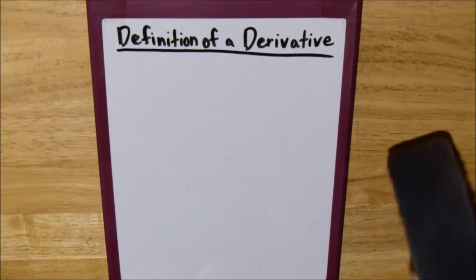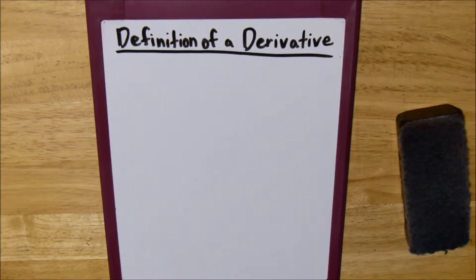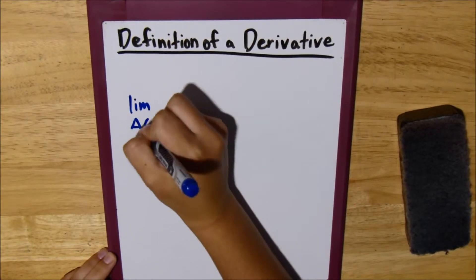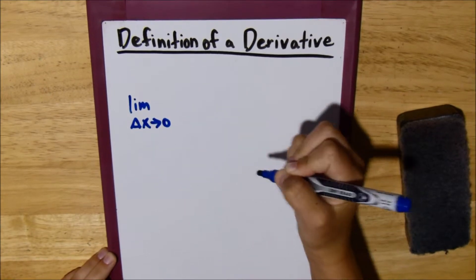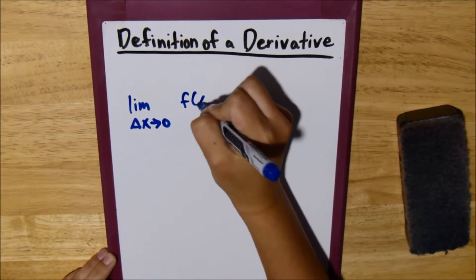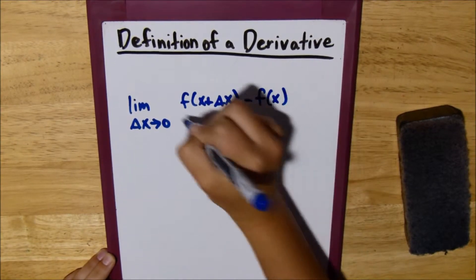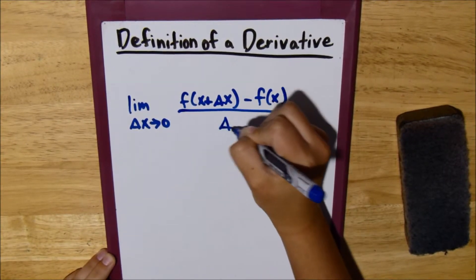Alright, so what we use to find the derivative of a function is the limit as delta x approaches 0 of f of x plus delta x minus f of x over delta x.